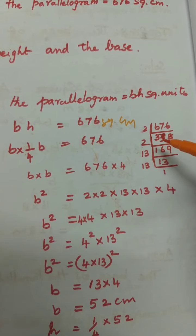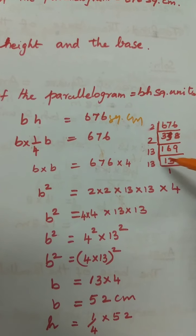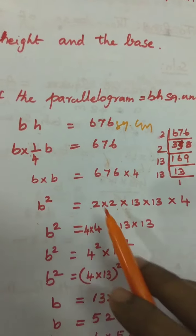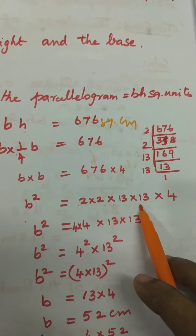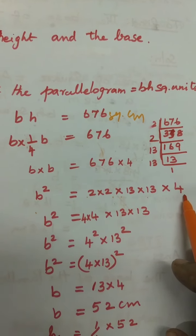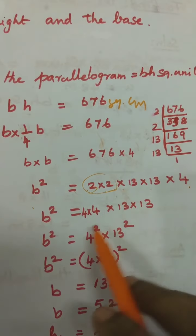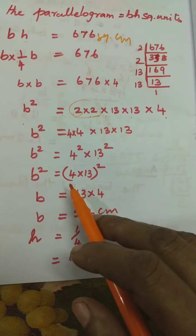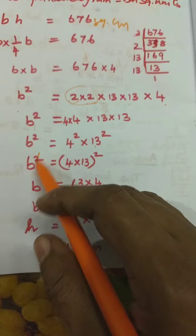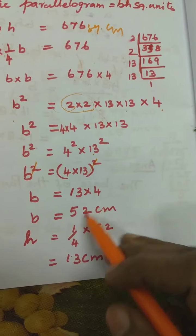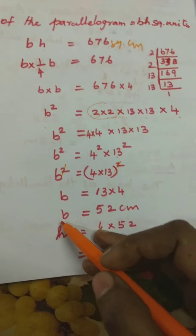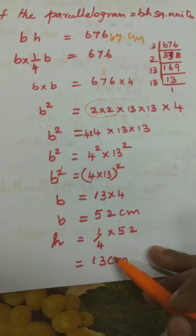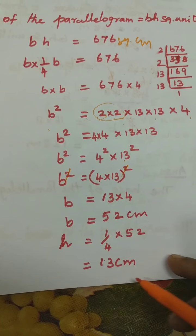So b² = 2 × 2 × 13 × 13 × 4 = 4² × 13². Taking square root: b = 4 × 13 = 52 centimetres. Height = (1/4) × 52 = 13 centimetres.